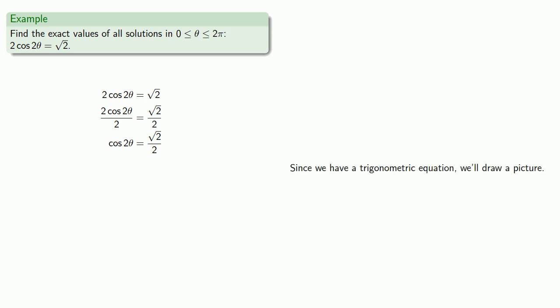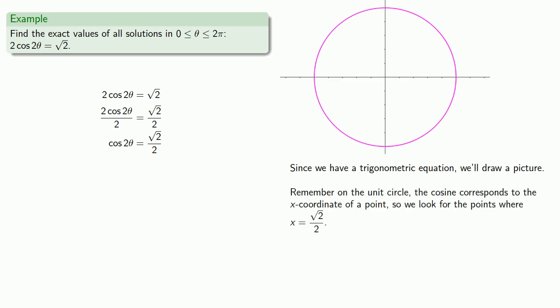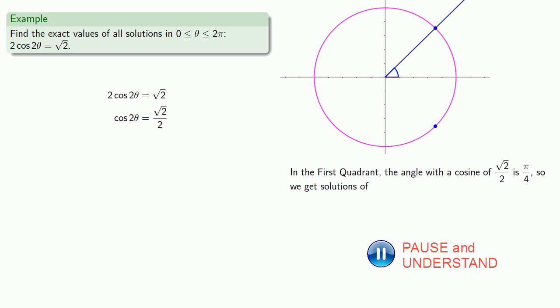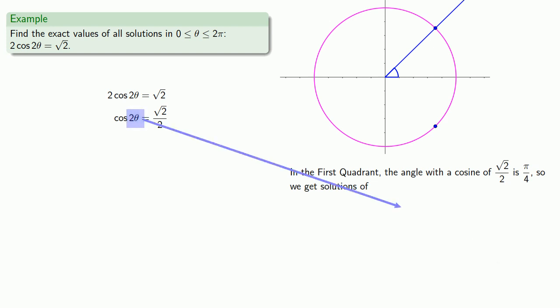Since we now have a trigonometric equation, we'll draw a picture — our unit circle. Remember that on the unit circle, cosine corresponds to the x-coordinate of a point, so we look for points where x = √2/2. We actually have two of them. Based on the exact values we know, in the first quadrant the angle with cosine = √2/2 is π/4. Since we're taking the cosine of 2θ, this means 2θ = π/4 plus or minus any multiple of 2π. But we wanted to find θ, not 2θ — so we'll solve for θ by dividing everything by 2.